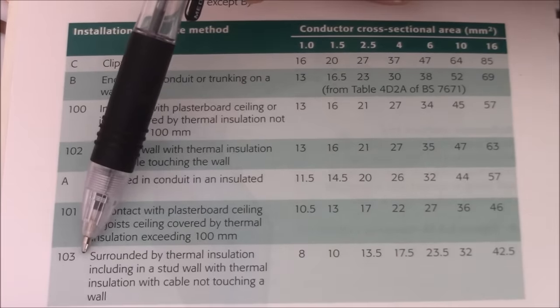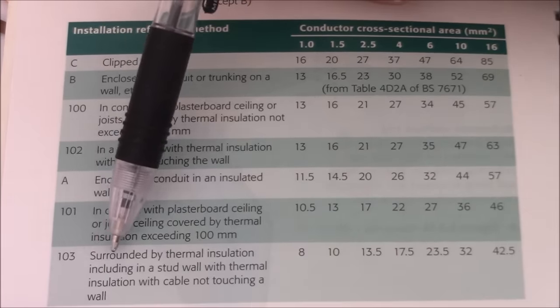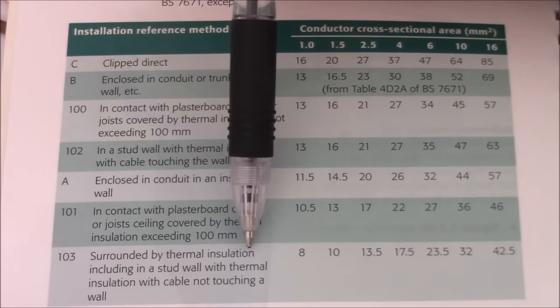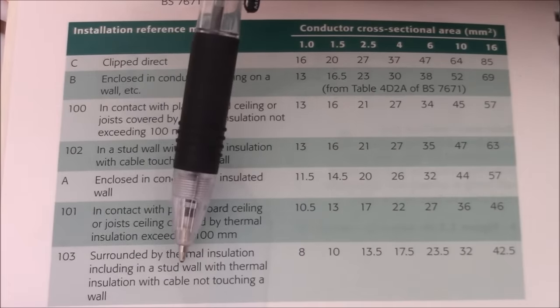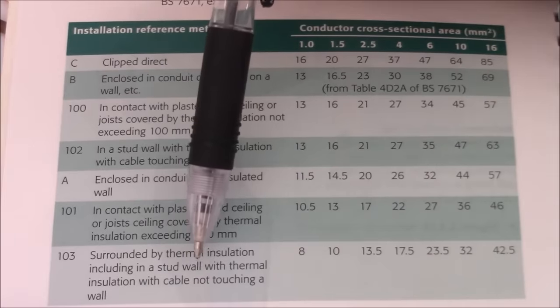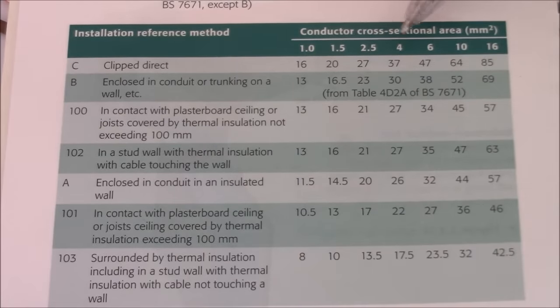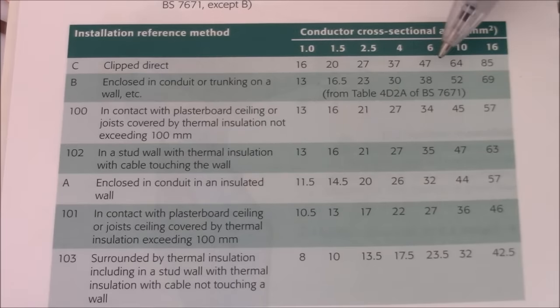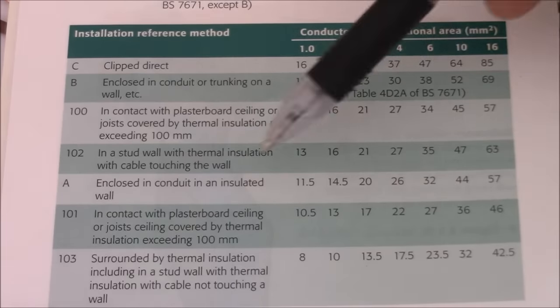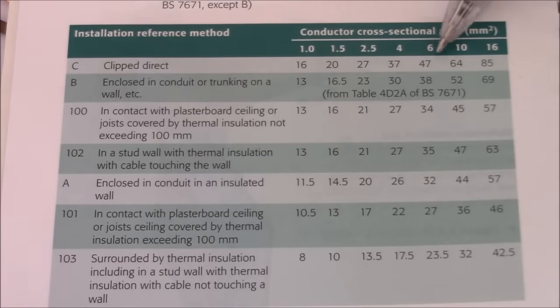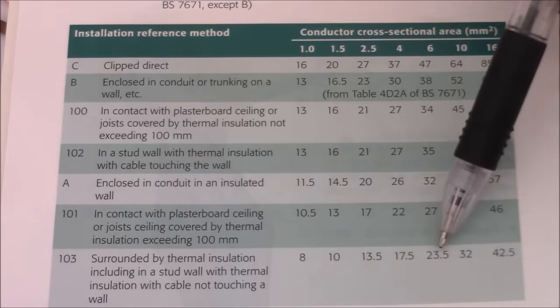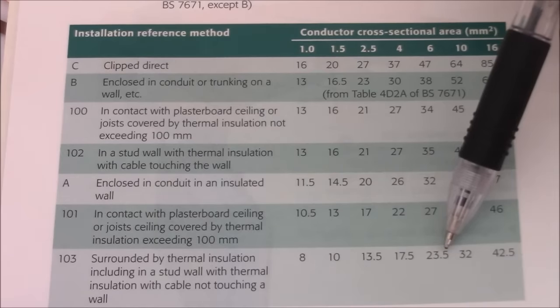So let's see the reference method 103. This is surrounded by thermal insulation completely, so basically from every side. So now look at the cable let's say 6 mm. When you clip direct to the wall it's 47 amps the rating. But when you wrap it, when you put it into insulation and wrap it completely, the rating falls down to 23.5 amps.